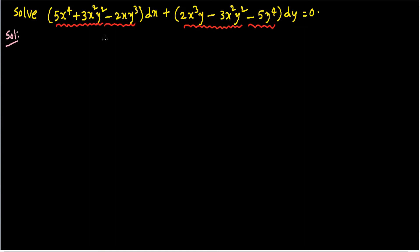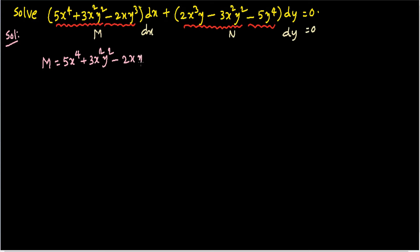The given equation is clearly in the form of M dx + N dy = 0. So first we write the value of M, which is the coefficient of dx: 5x⁴ + 3x²y² - 2xy³. And the value of N, which is the coefficient of dy: 2x³y - 3x²y² - 5y⁴.